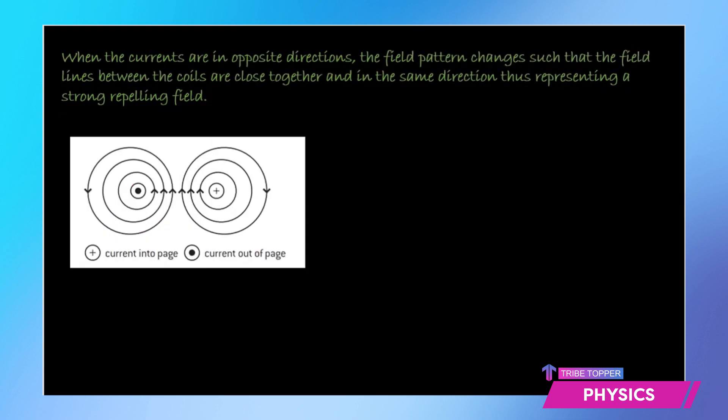But when the currents are in opposite directions, the field pattern changes such that the field lines between the coils are close together in the same direction, but they represent a strong repelling field.